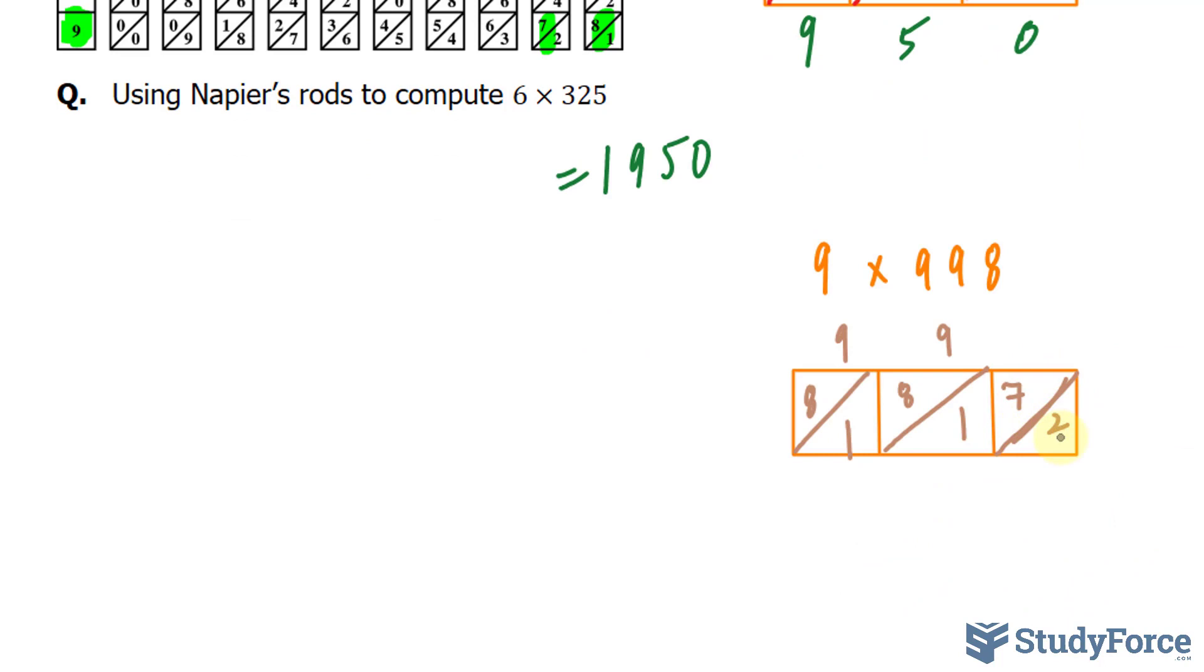Remember, these are diagonals. So 2, 1 plus 7 is 8, 1 plus 8 is 9, and finally that 8 gets written as it is.